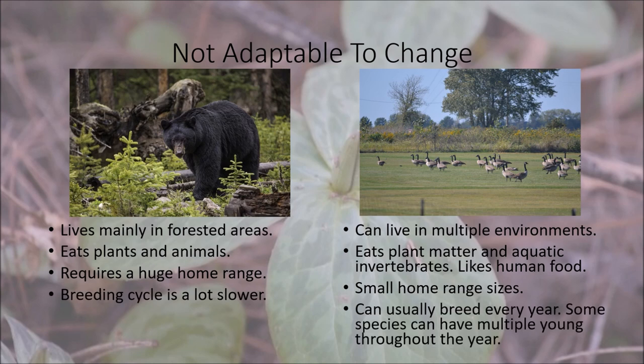Another big reason black bears are considered endangered is their breeding cycle — it's very slow. Bears breed every other year, whereas Canada geese typically have one batch of goslings, and some species can have multiple young throughout a year, meaning their populations can grow dramatically in a short period of time. These are some reasons why one animal can be considered endangered while the Canada goose is very common throughout Ohio and Marion County.